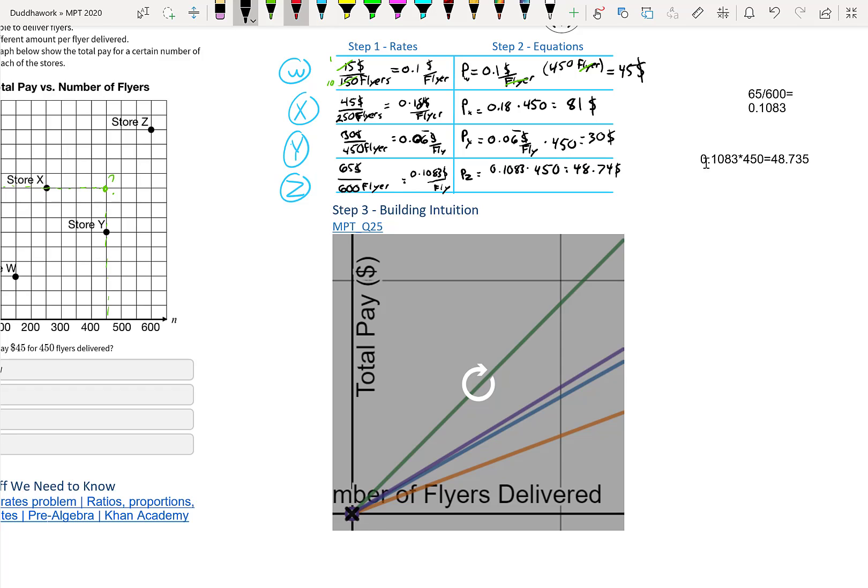So the best paying one is X. The second best paying one is Z. The third best paying one is W. And the worst paying one is that one, Y.